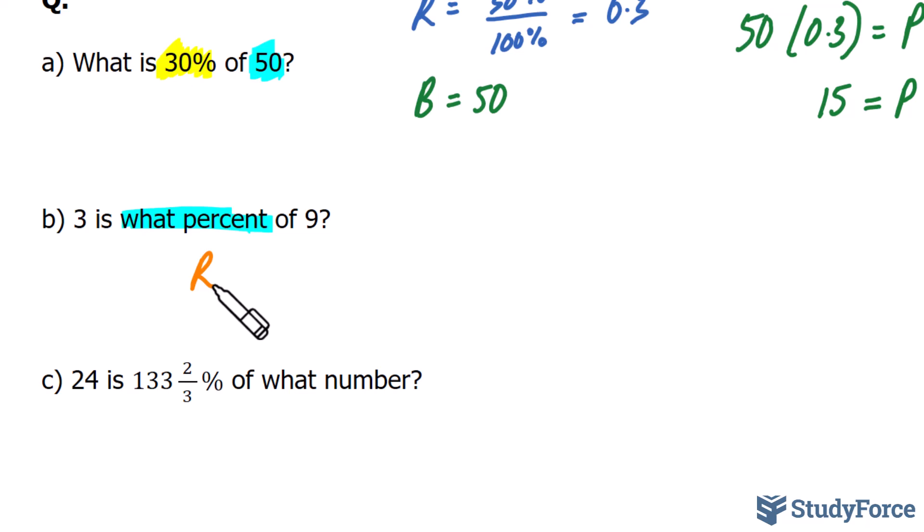If we look back at the formula, BR equals P, the other two numbers provided in the question must represent either B or P. So which of these, 3 and 9, represents B and P? Here, 9 will represent the base value, and the reason for that is because the percentage is always associated with the base, in the sense that we're always finding the percentage of a base.